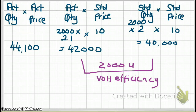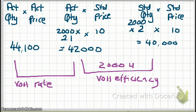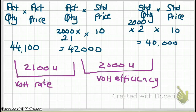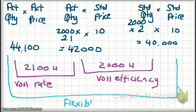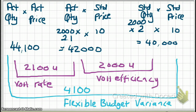Next, we calculate our variable overhead rate variance, which is the difference between $42,000 and $44,100 — a difference of $2,100. We expected $42,000 but actually spent $44,100, so we spent more than we should. Therefore, it is unfavorable. Since this is variable manufacturing overhead, the sum of the rate and efficiency variances gives you the flexible budget variance. We expected $40,000 and ended up with $44,100, giving a flexible budget variance of $4,100 — also unfavorable.